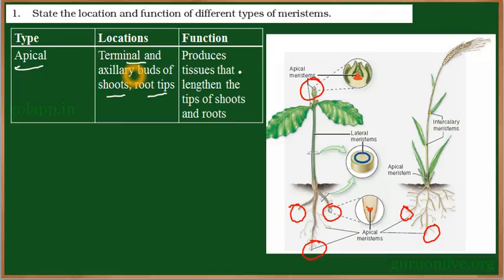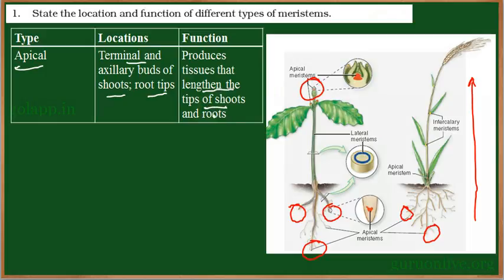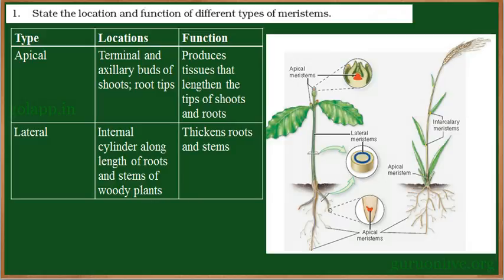The function of apical meristems is that they constantly divide and give rise to new cells, allowing the plant to grow and increase its length — both shoot length and root length. So apical meristem majorly helps in increasing the length of the shoot tips and root tips.